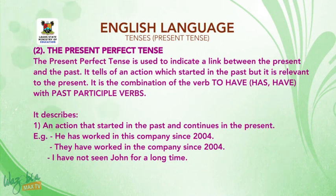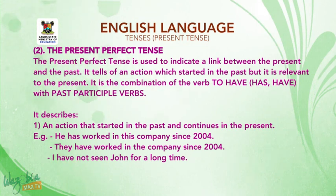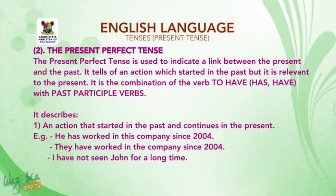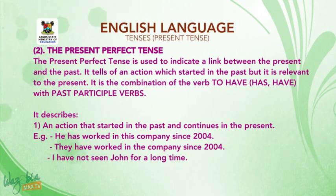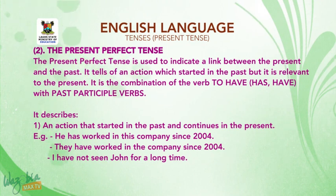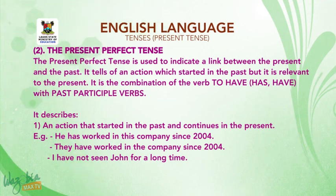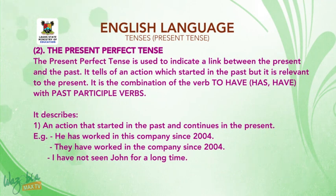Let's go to the present perfect tense. It is used to indicate a link between the present and the past — it tells of an action which started in the past but is relevant to the present. It is the combination of the verb 'to have' (i.e., has/have) with past participle verbs. It is used to describe: 1. An action that started in the past and continues in the present. For example: He has worked in this company since 2004.